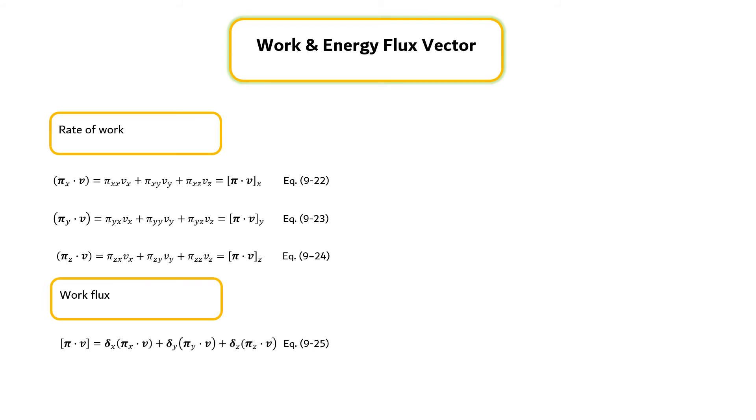The combined energy flux vector E can be expressed by equation 9.26. The E vector is the sum of the convective energy flux, the rate of doing work per unit area by molecular mechanisms, and the rate of transporting heat per unit area by molecular mechanisms.